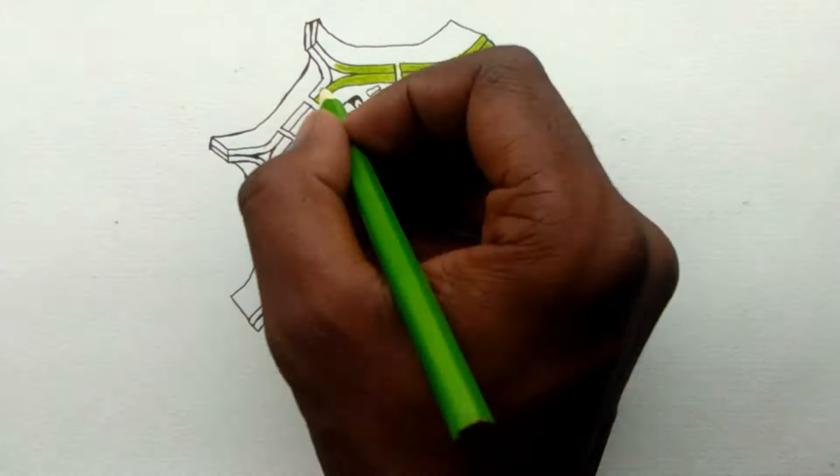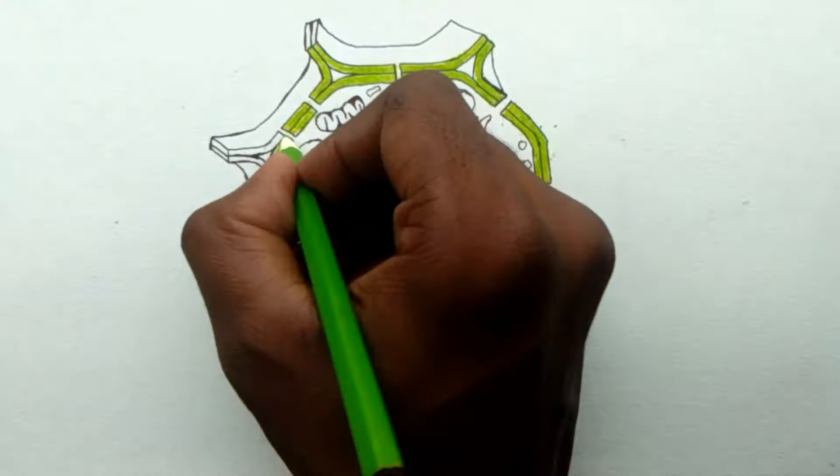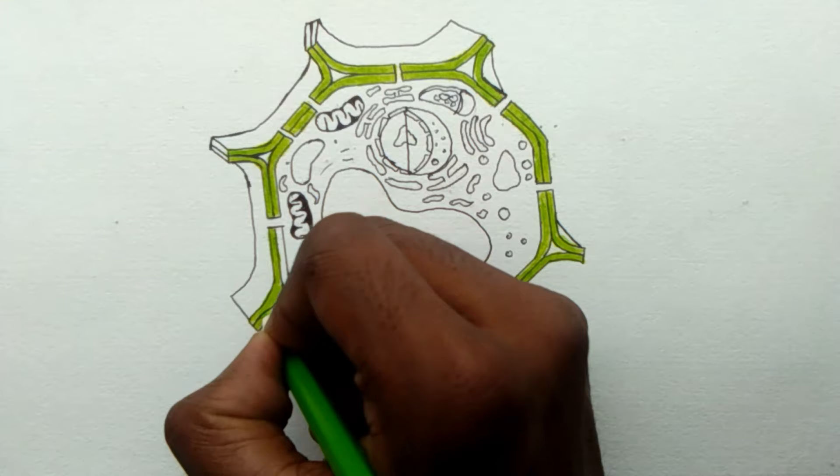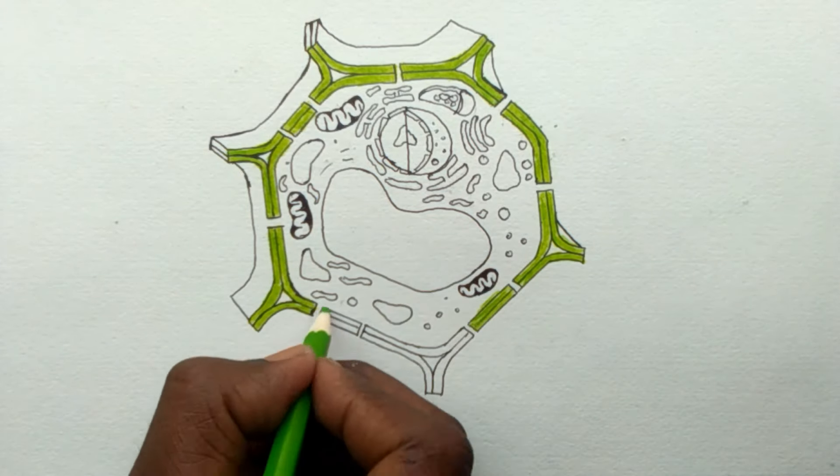But if the diagram comes in your science examination, then you don't need to color it. You should only draw it with your pencil and mark the correct places.